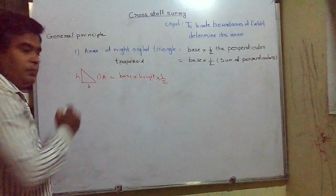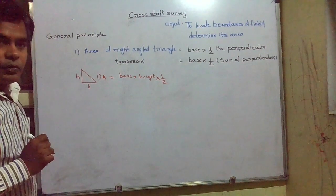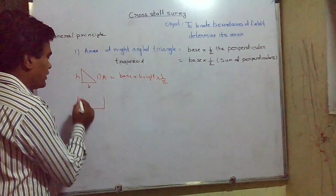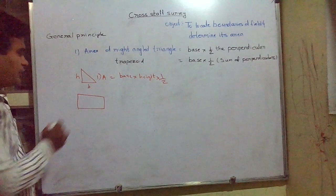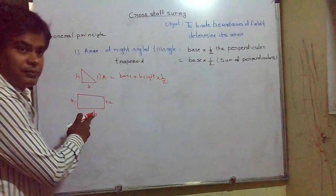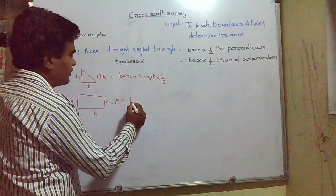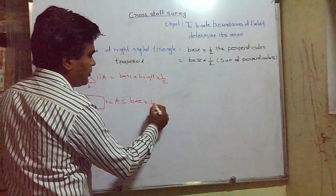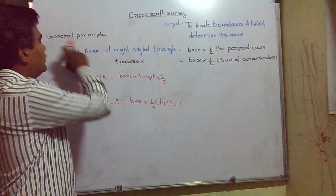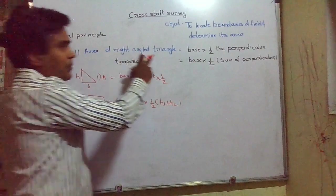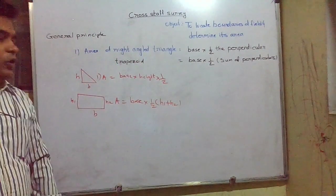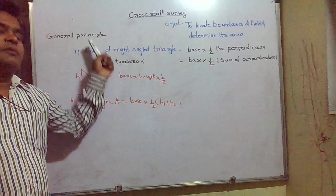So this is one principle to determine the cross staff survey, and the second is area of the trapezoid. If there is some trapezoid, we know two sides of the trapezoid are parallel. If we have to determine the area of this trapezoid, let its sides be h1 and h2 and let the base be the base. The area of trapezoid is equal to base into half sum of the heights. So the principle on which cross staff survey is based: area of right angle triangle equals base into half the perpendicular, and area of trapezoid equals base into half the sum of perpendiculars.